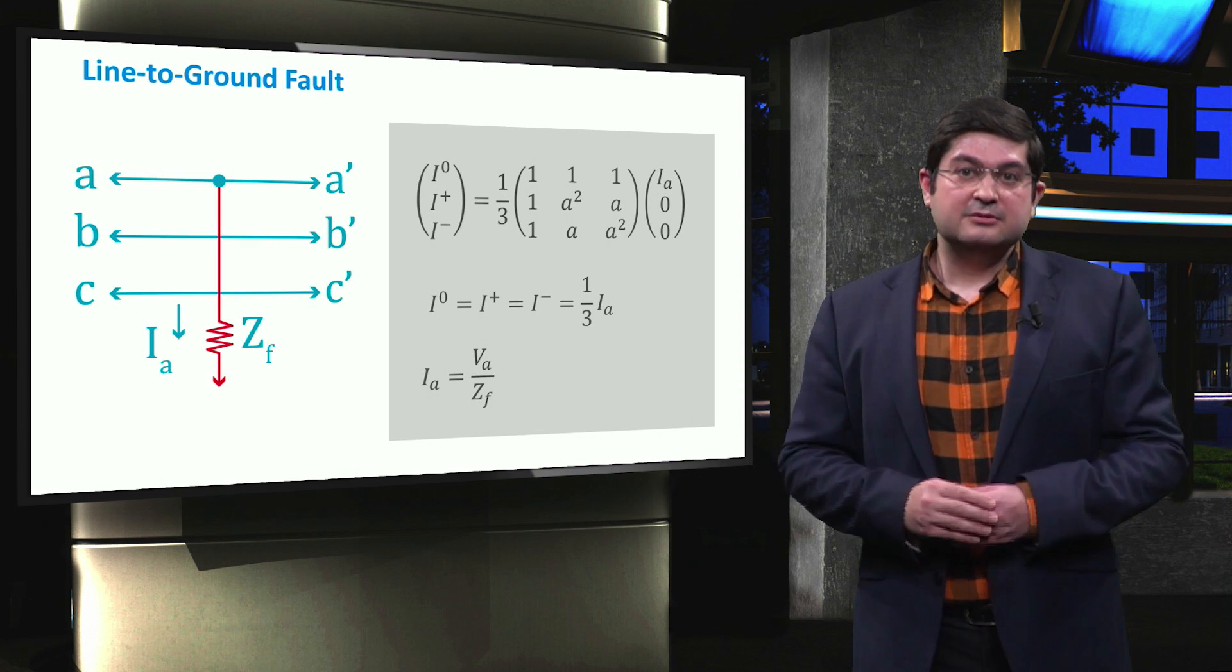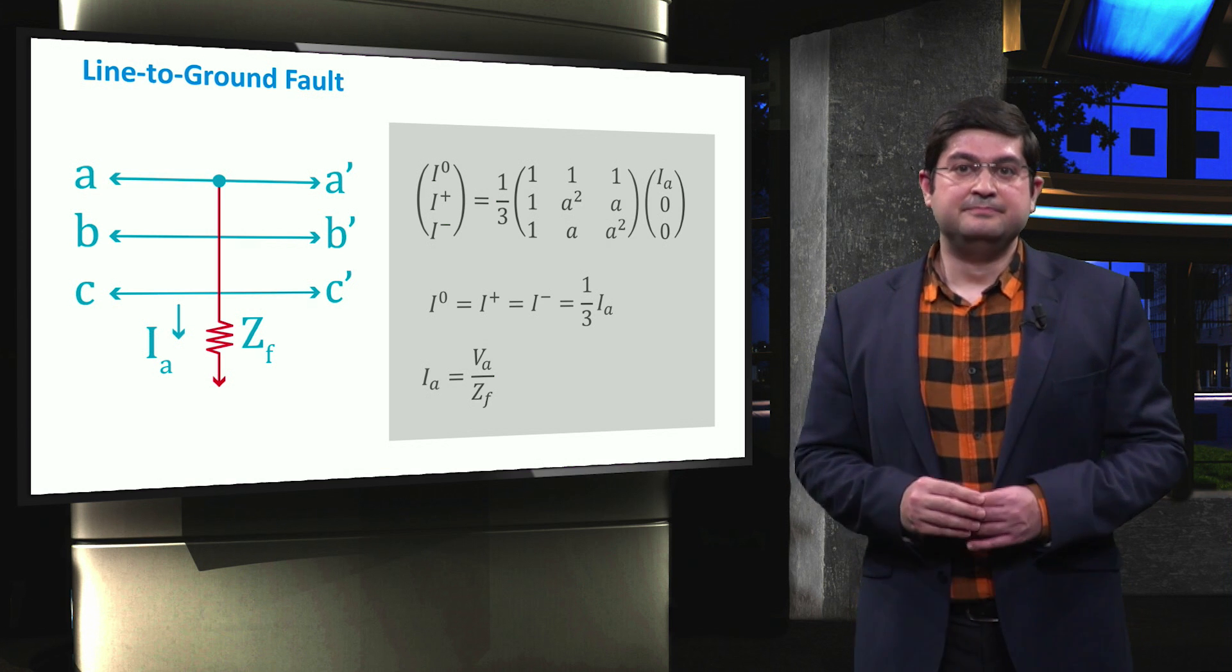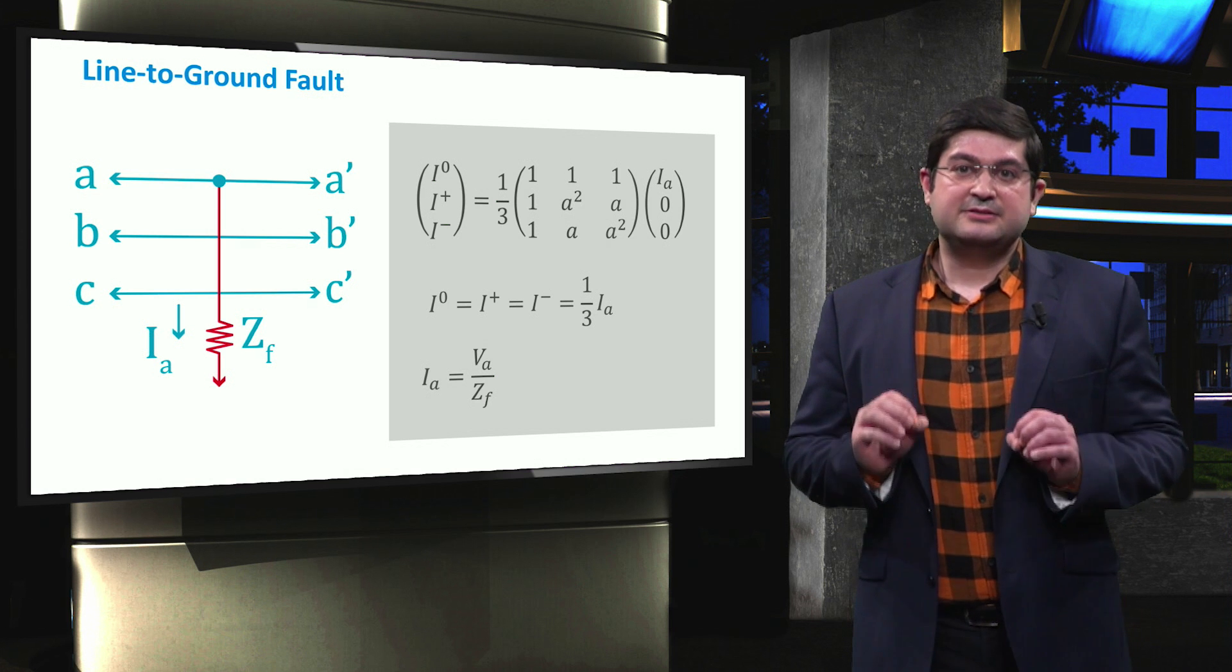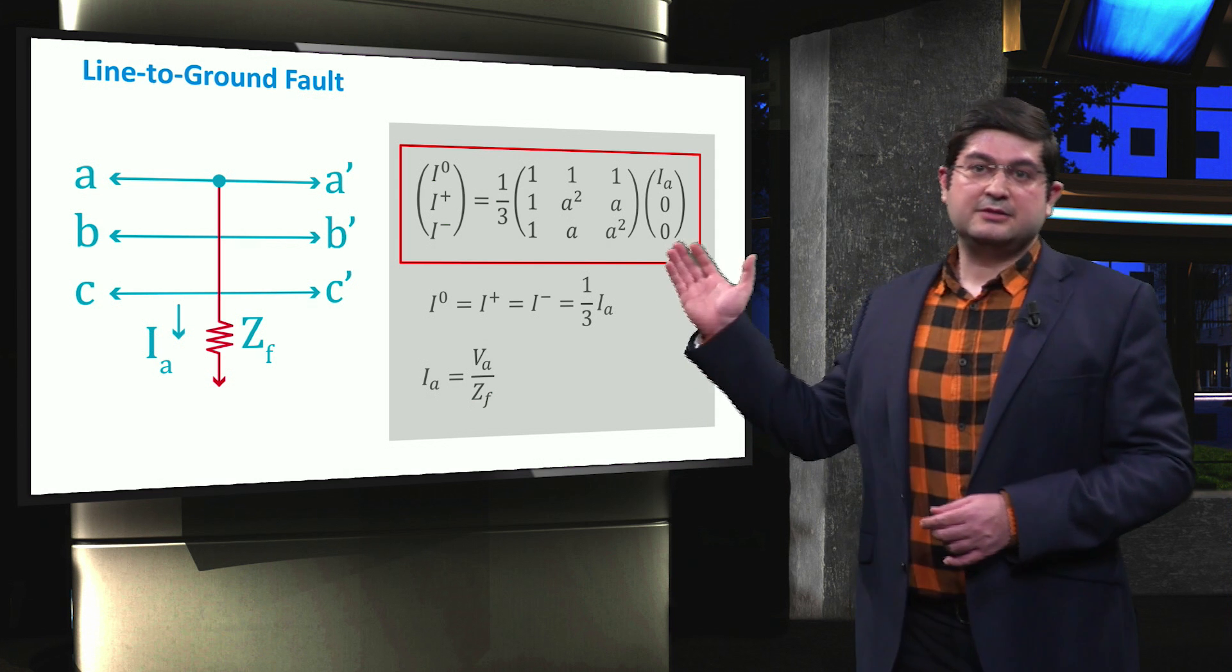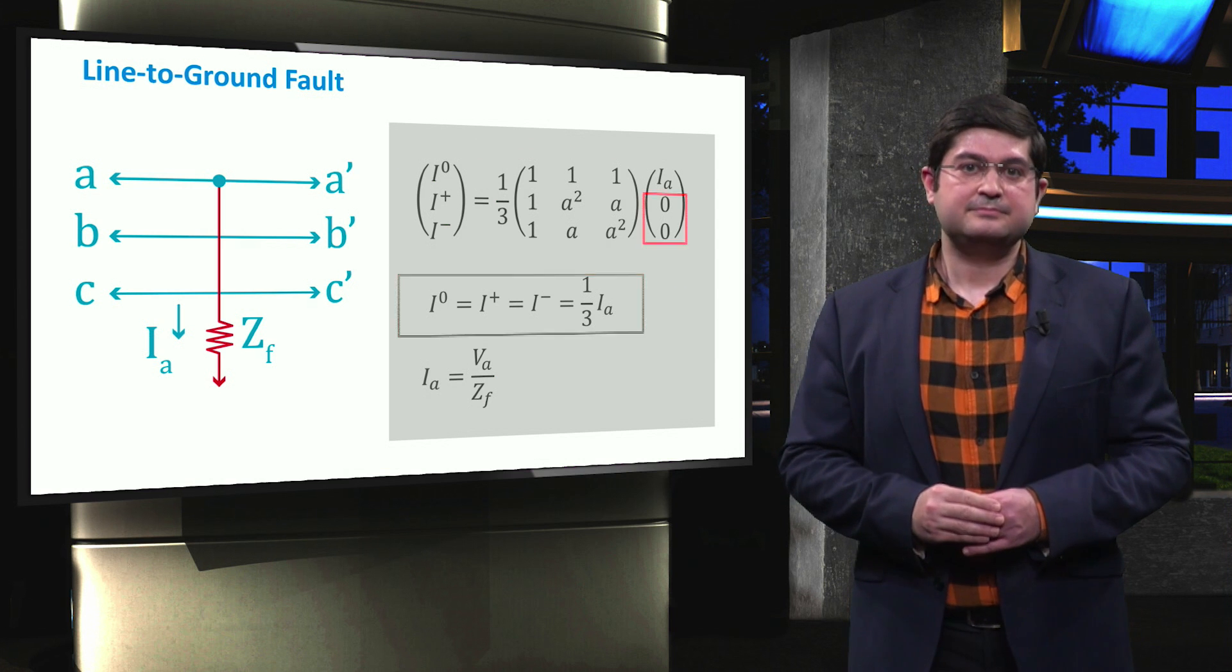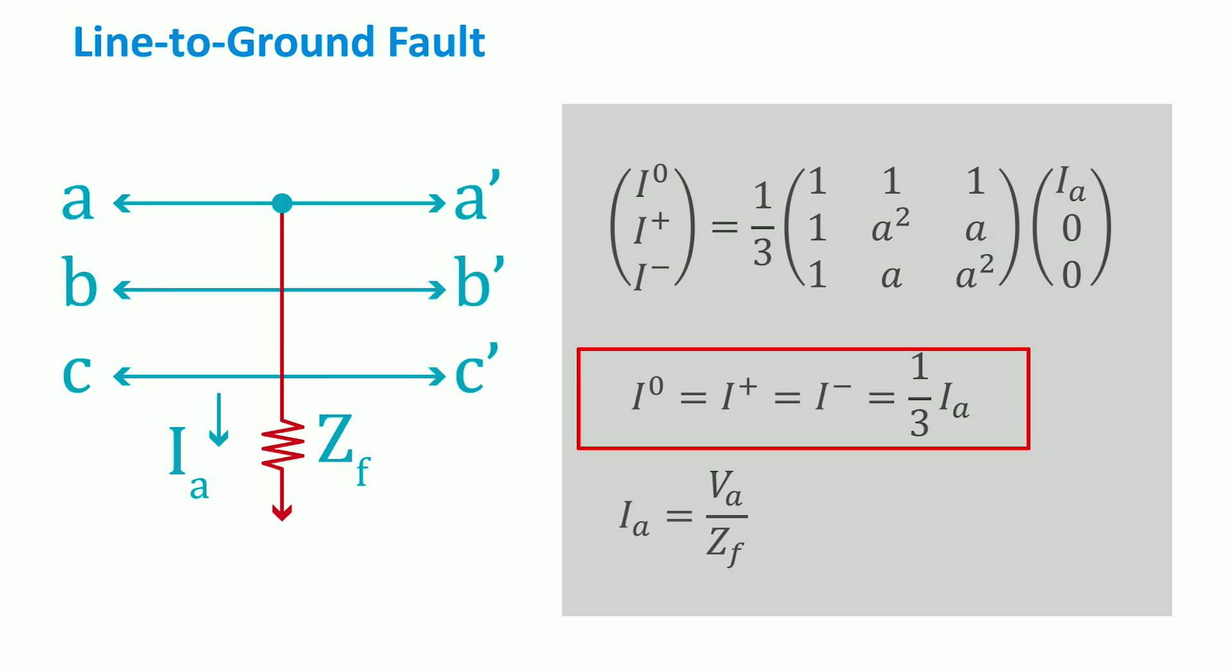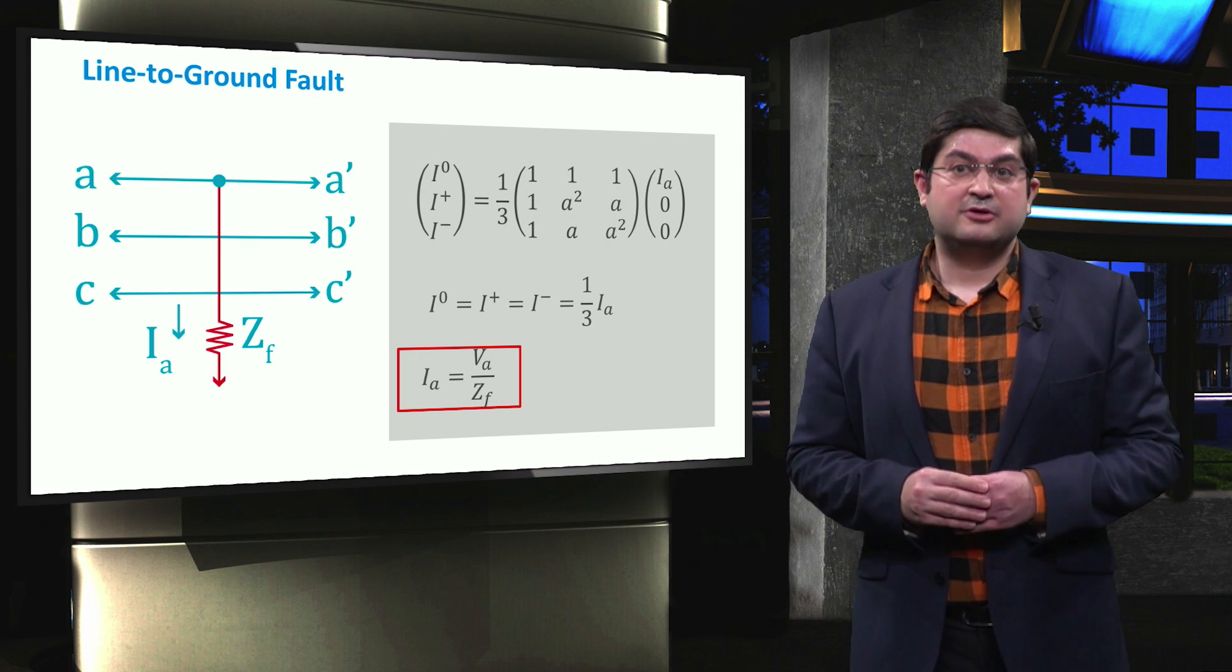As mentioned, the most common type of fault is the line-to-ground one. In the figure, phase A is connected to the ground through the impedance ZF. We recall the video in the first week where the sequences of the three-phase systems were formulated. The zero, positive, and negative currents are obtained using the equation shown on the right. During the single-phase to ground fault, obviously the values of the current of phases B and C are zero. Then, the values of the zero I0, positive I-positive, and negative currents I-minus are obtained the same, that are equal to one-third of the fault current IA. The fault current can be calculated dividing the voltage of phase A by the impedance of the fault ZF. Note that if the impedance of the lines is not neglected, then the fault current will also be a function of the zero, positive, and negative impedances of the line.